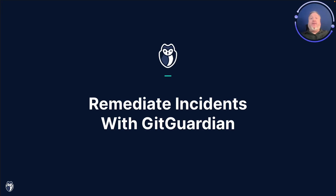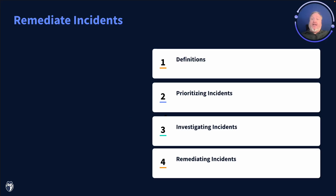Hi everyone, it's Dwayne, Developer Advocate at GitGuardian. This video is a high-level overview of how to go about remediating incidents, leveraging the GitGuardian internal monitoring platform. We'll take a look at some definitions, how to prioritize incidents, how to investigate those incidents, and finally the steps to take to remediate any issues found.